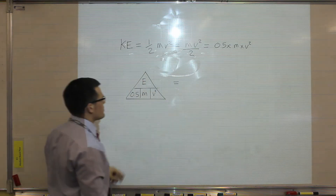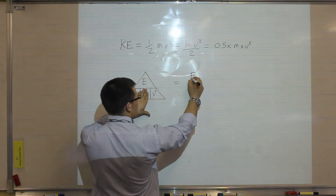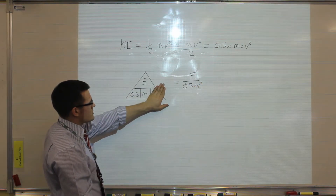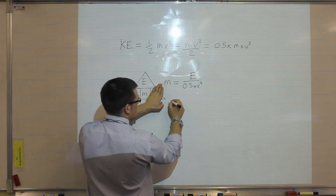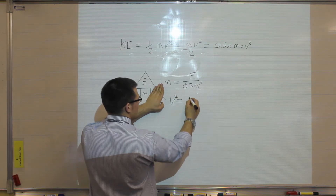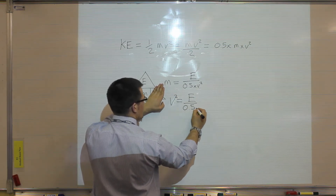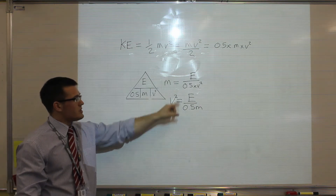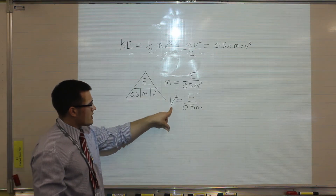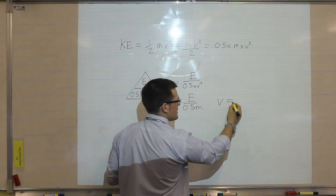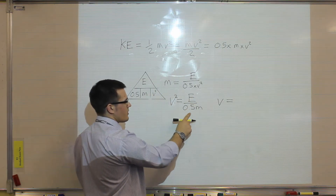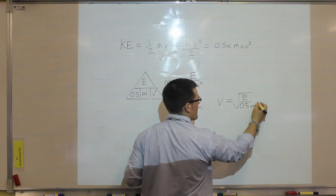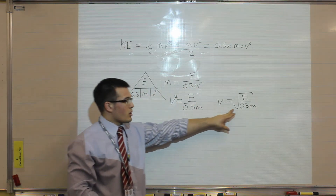To work out mass, cover it and you get energy divided by 0.5 times velocity squared. To find velocity squared, cover it and you get energy divided by 0.5 times mass. There is still one issue: the triangle gives velocity squared, not velocity. So the final step is that velocity equals the square root of E divided by 0.5 multiplied by mass — to remove the squared function you take the square root, which is the opposite operation.